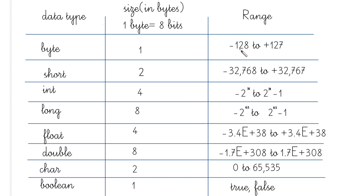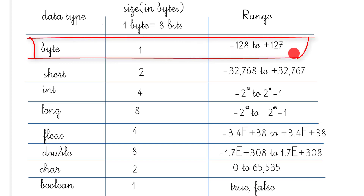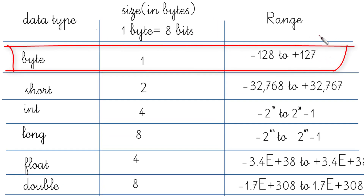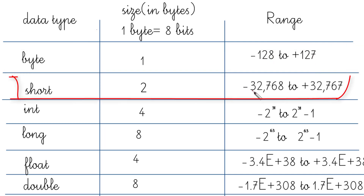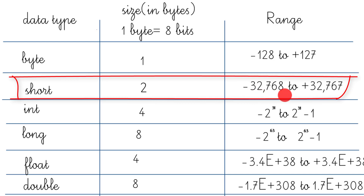Now for the ranges. The range of a byte variable is -128 to +127. On the positive side it is always one less than the magnitude, because zero is included. For a short, which occupies two bytes, the range is -32,768 to +32,767 — again, one less on the positive side.